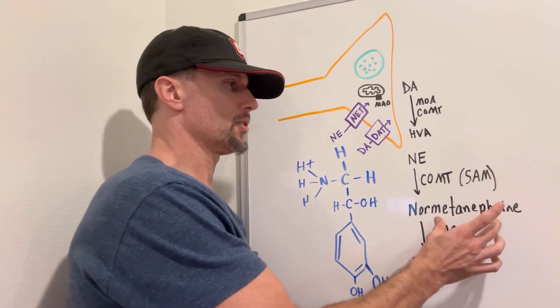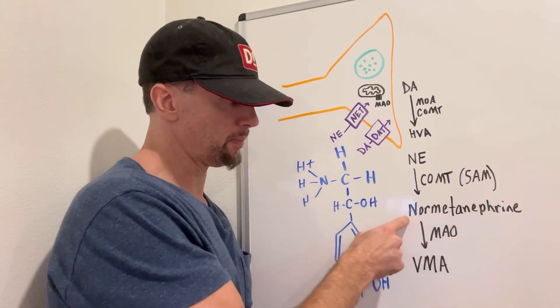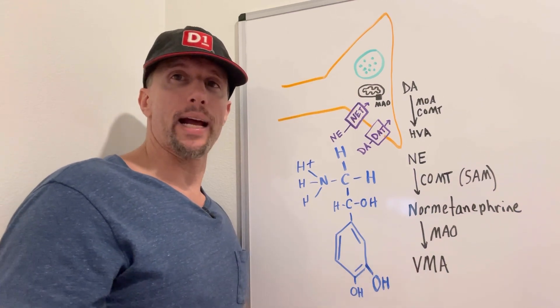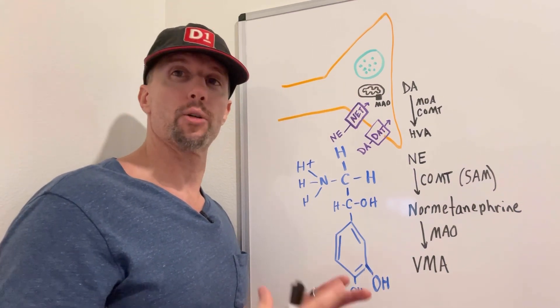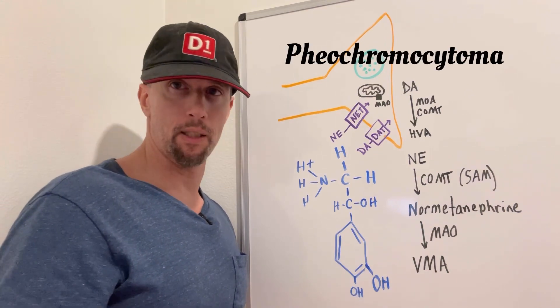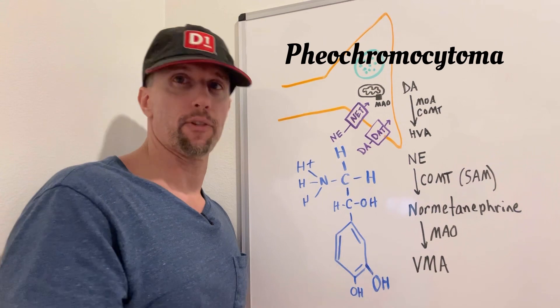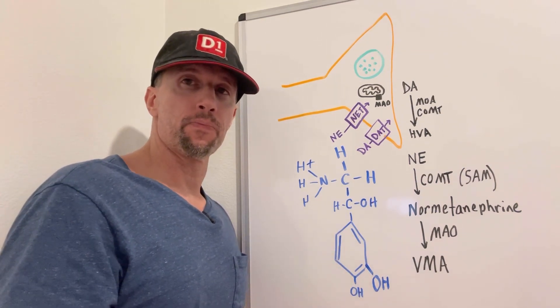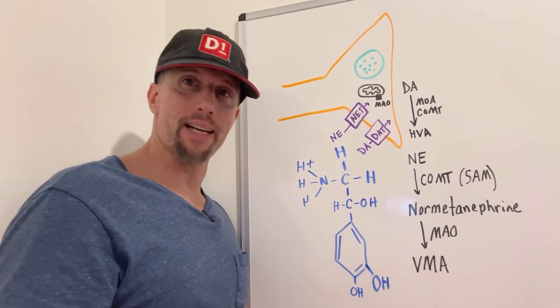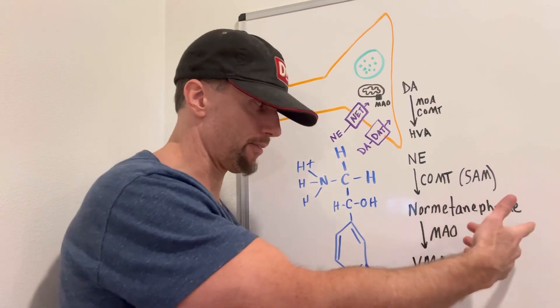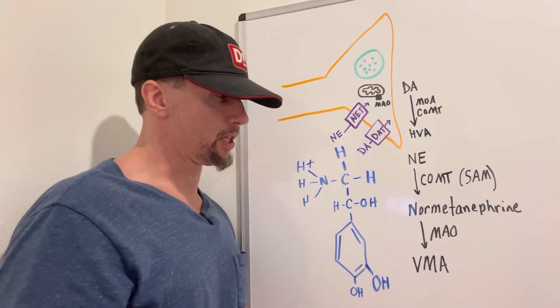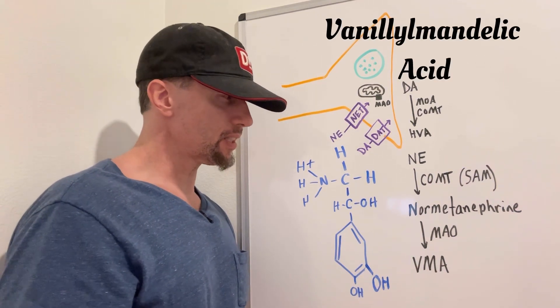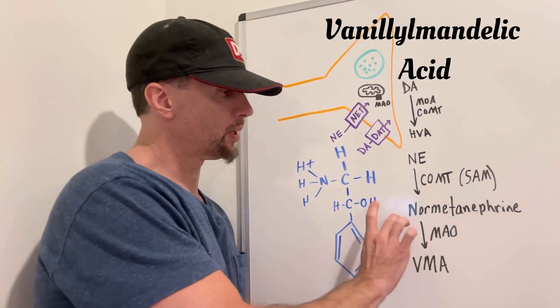So once that happens, it's normetanephrine, and I want you to remember that intermediate, because there's a test for that in the urine to see maybe someone has a tumor, like there's a tumor of the adrenal medulla called pheochromocytoma, where you get a whole bunch of norepinephrine being made, and it can send you into a hypertensive crisis, because it elevates your blood pressure, and if you have a lot of that, then you'll have a lot of breakdown products, which would be normetanephrine, or the next step, which is called vanillomandelic acid, or VMA is easier to say.